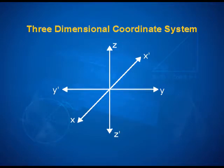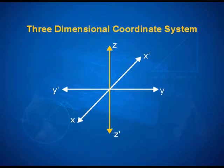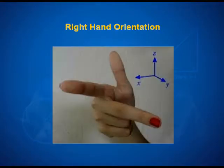For the 3-Dimension Coordinate System, we take three lines which are mutually perpendicular to each other: the x-axis, the y-axis, and the third axis — the z-axis — which gives the height, adding a third dimension to a point. How we define and use the orientation of these three axes is governed by what is called the right-hand orientation.